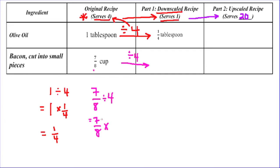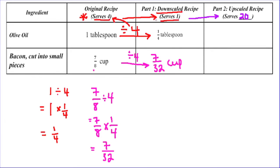Division turns to multiplication, and the reciprocal of four is one fourth. Top times top: seven. Bottom times bottom: 32. So we would need seven over 32 cups of bacon to serve one person in the spaghetti carbonara recipe.